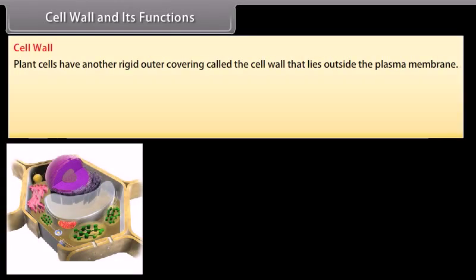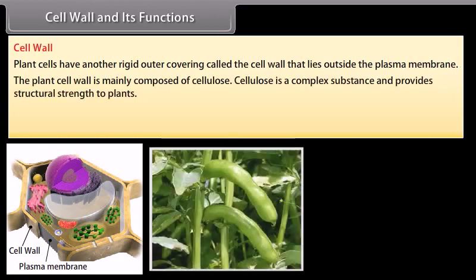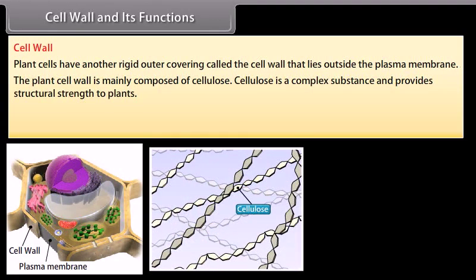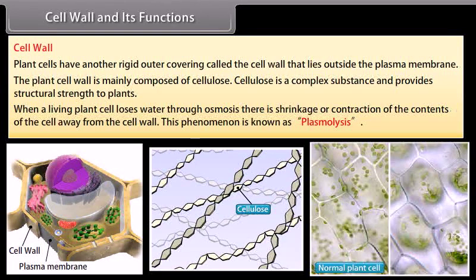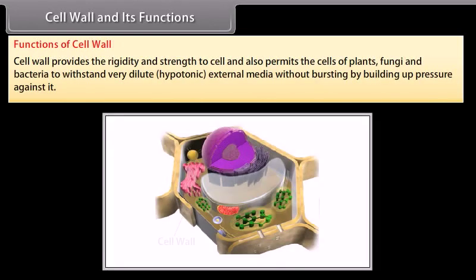Plant cells have another rigid outer covering called the cell wall, which lies outside the plasma membrane. The plant cell wall is mainly composed of cellulose, a complex substance that provides structural strength to plants. When a living plant cell loses water through osmosis, there is shrinkage or contraction of the contents of the cell away from the cell wall — this phenomenon is known as plasmolysis. The cell wall provides rigidity and strength to the cell and also permits the cells of plants, fungi, and bacteria to withstand very dilute hypotonic external media without bursting, by building up pressure against it.